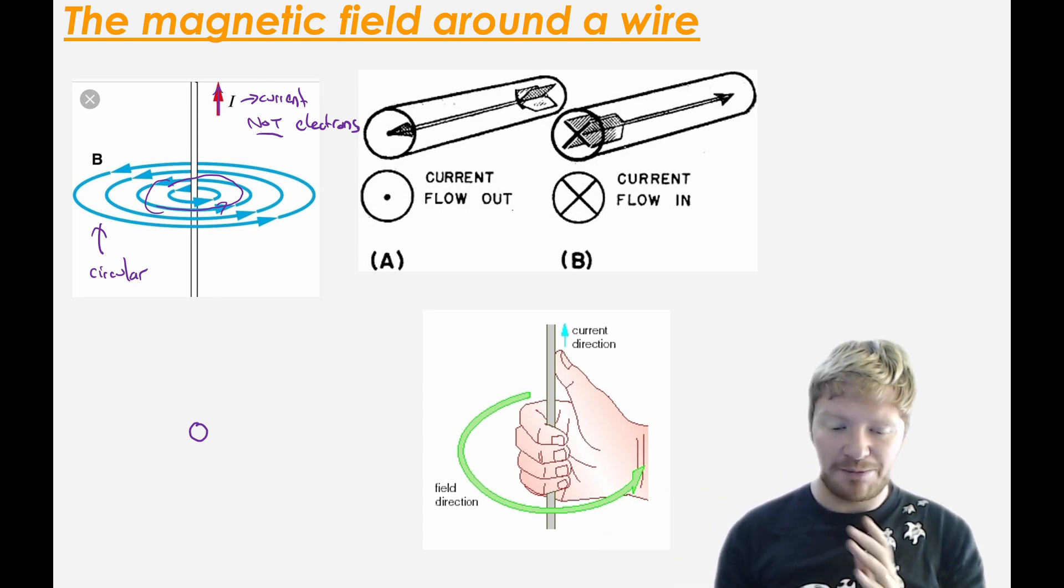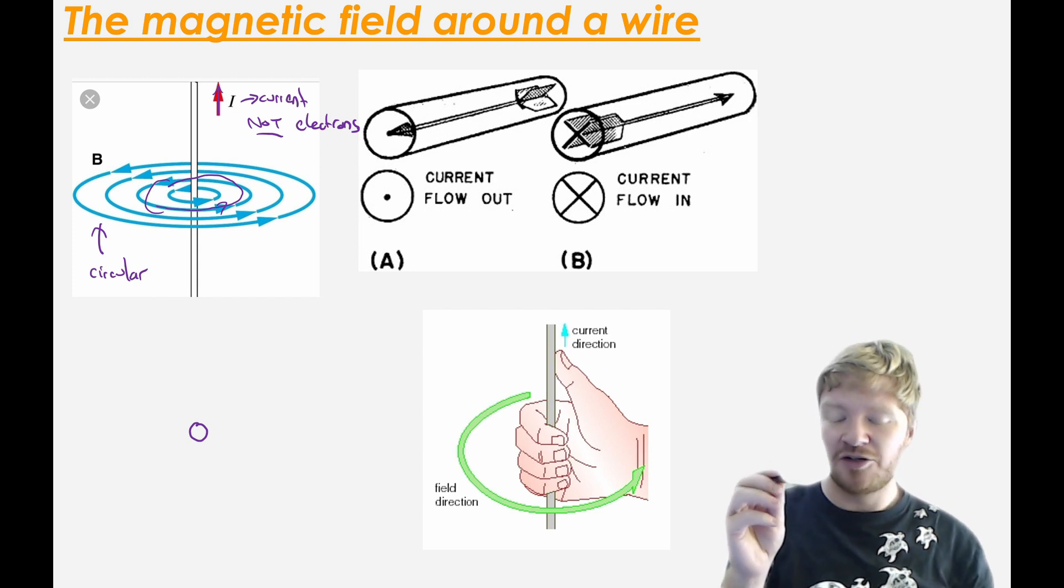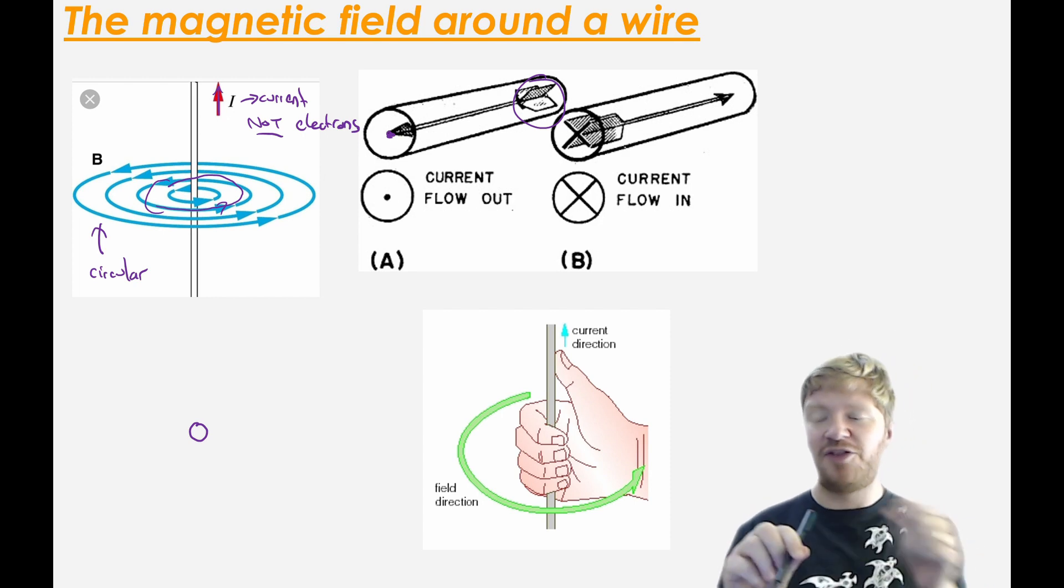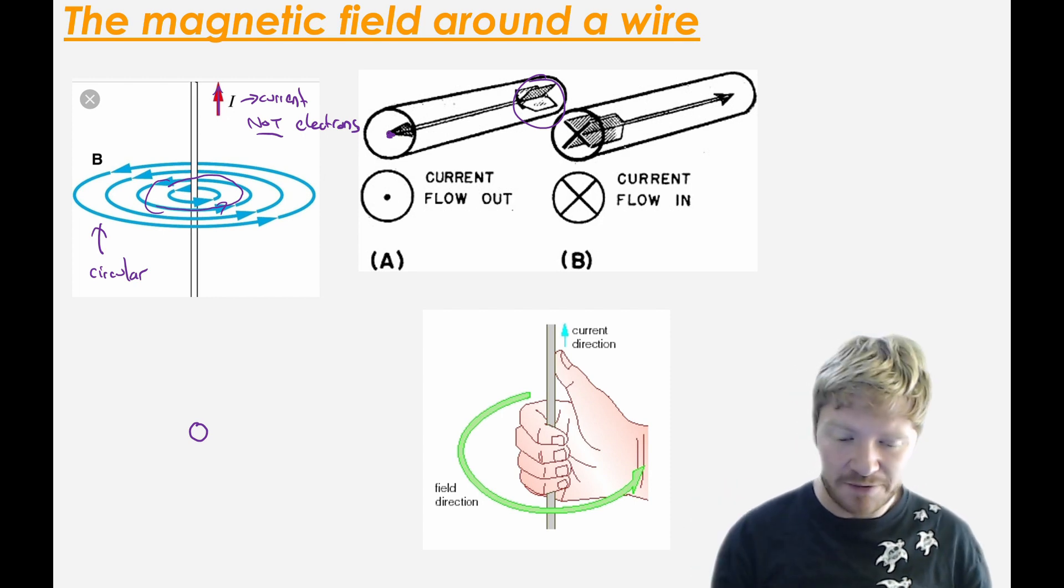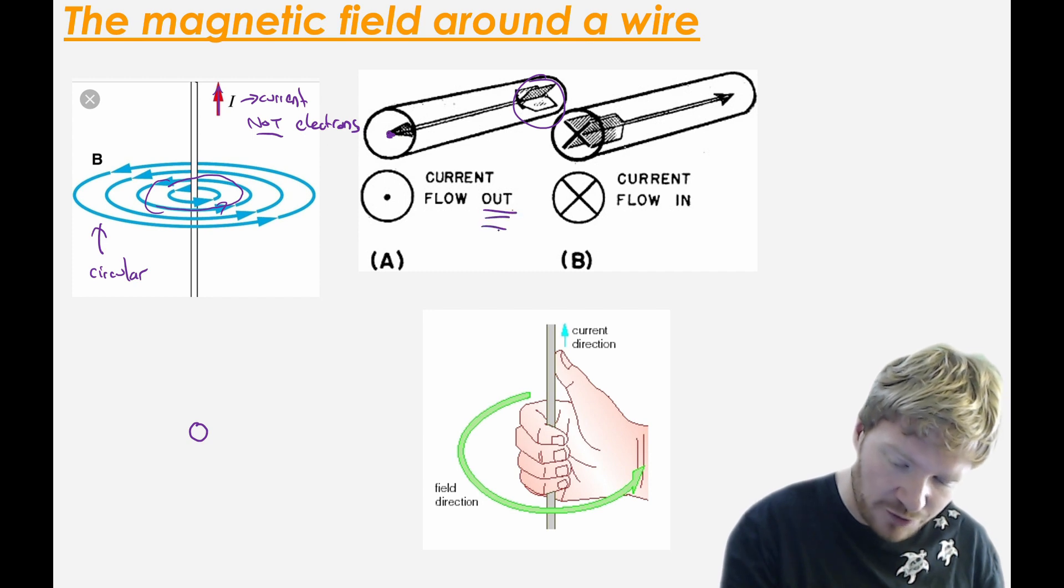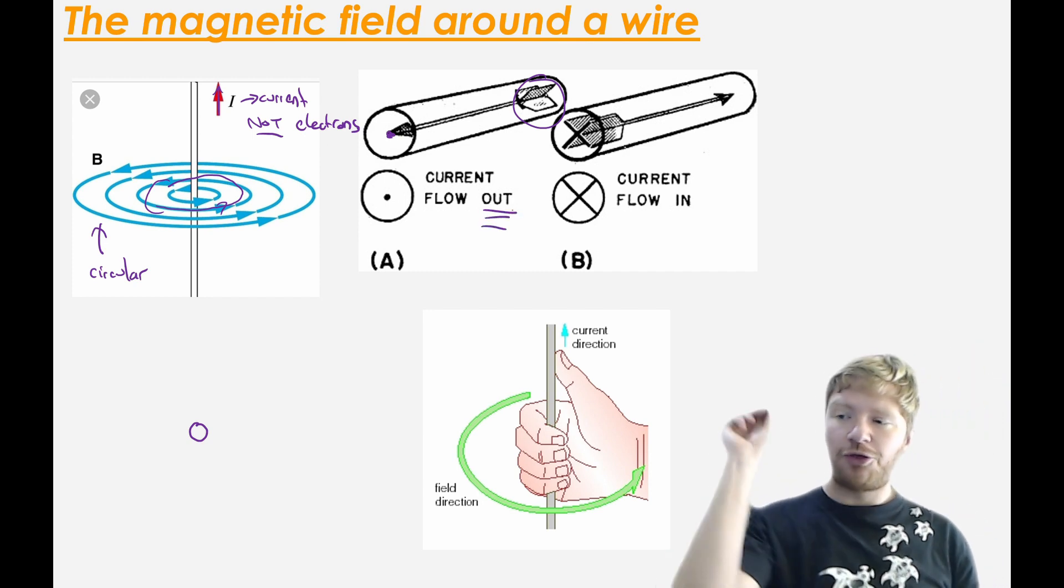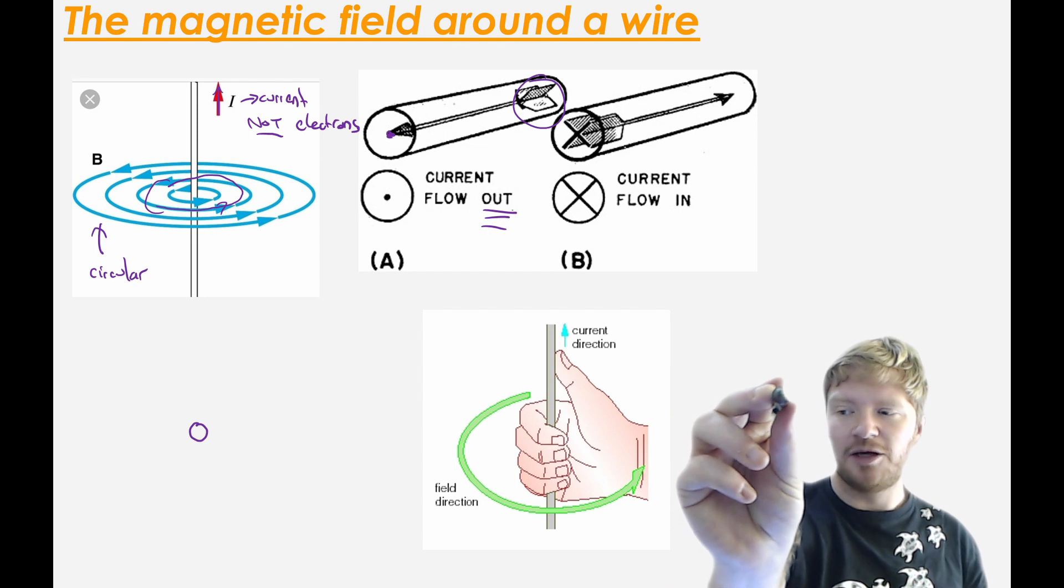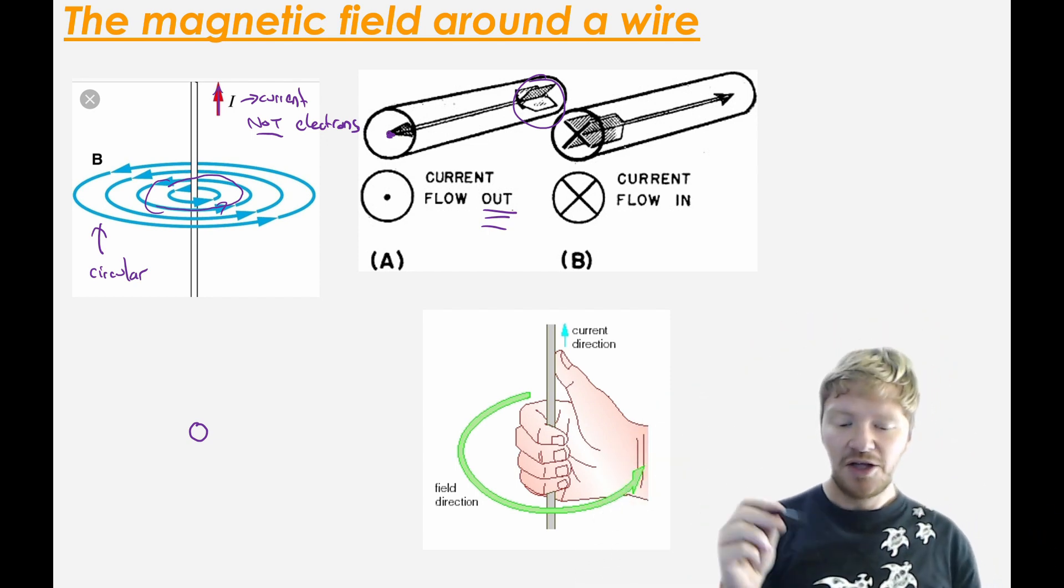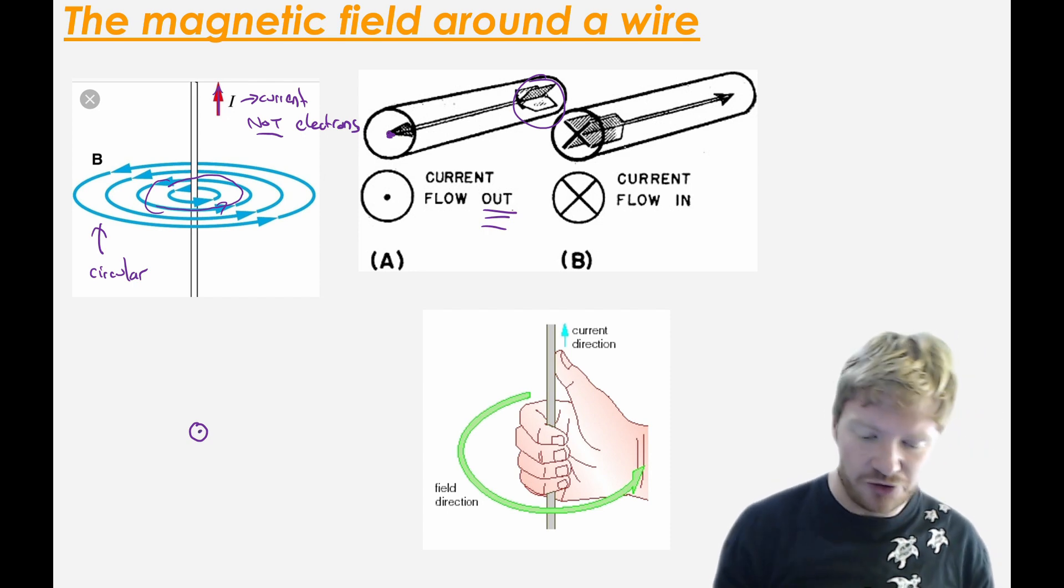What we do is we imagine a dart. So if you've ever played darts, you know that it's got a pointy end and it's got a fletching or feathers at the back or a flight. So what we do is if I want to do something going out of the page, if you imagine I throw a dart at you, what will you see? Coming towards you, you will see the point. So if I want to draw a current coming out of my page, I do a wire and I put a dot in it.